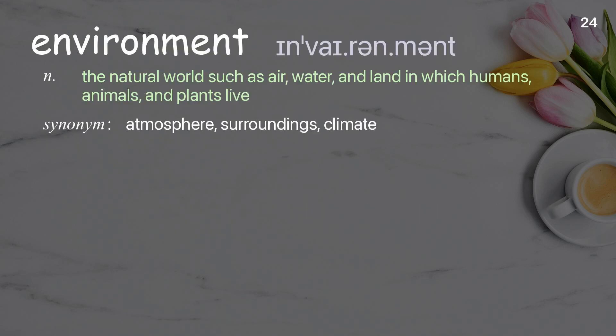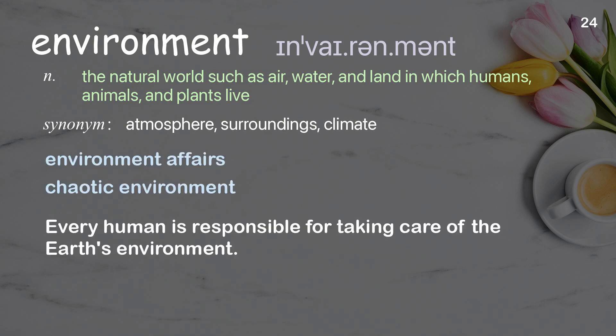Environment: the natural world such as air, water, and land in which humans, animals, and plants live. Examples: chaotic environment. Every human is responsible for taking care of the Earth's environment.